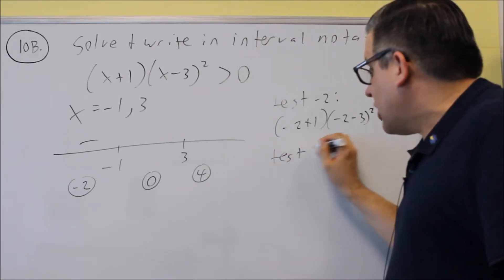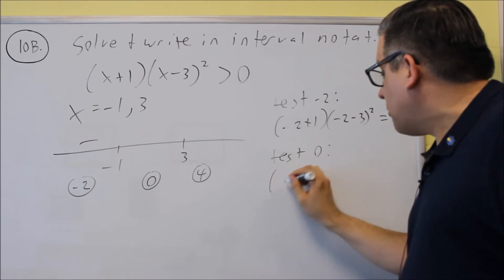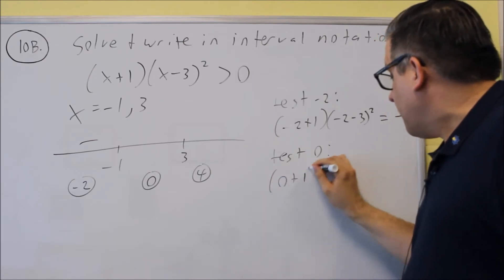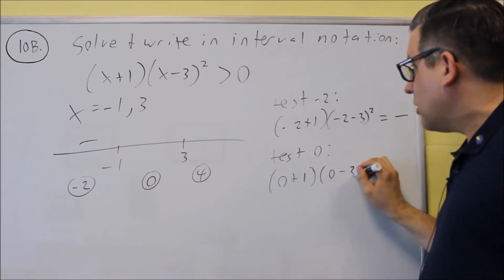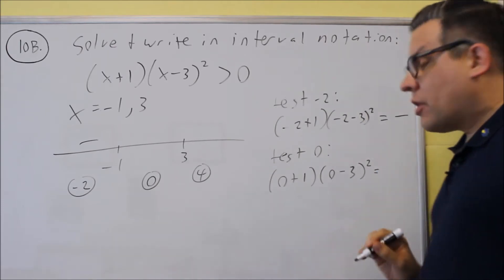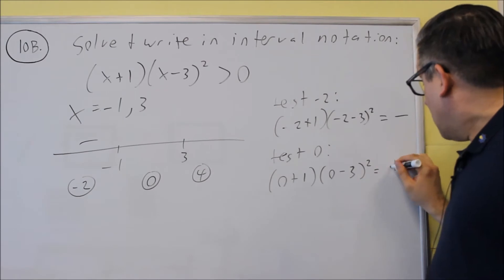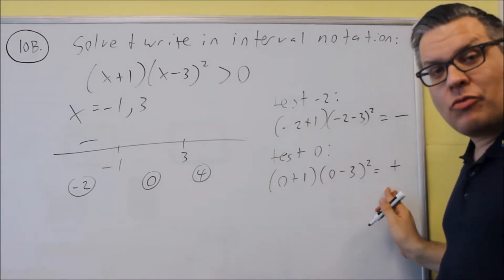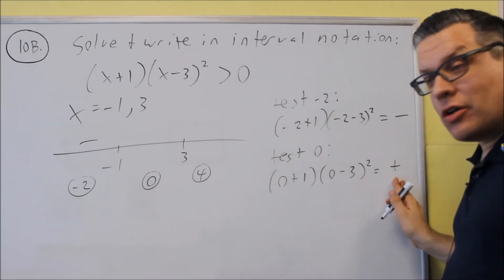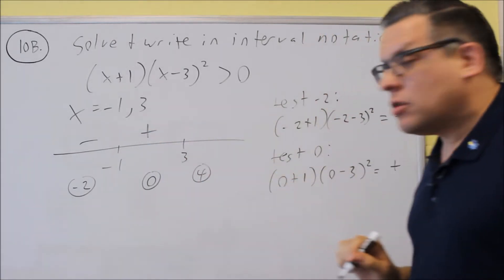Next, I'm going to test zero. I put zero into the pieces here. So I get a positive here, and a square always gives me a positive. So a positive and a positive will give me a positive when I multiply these together. That's a plus sign that goes there.